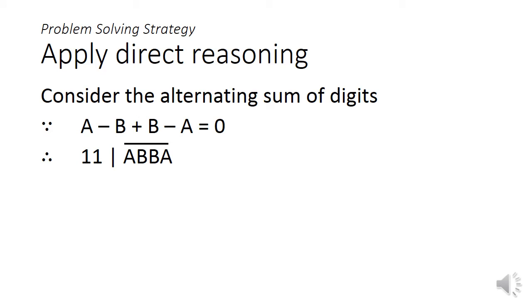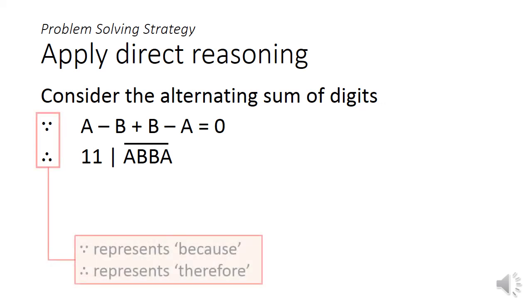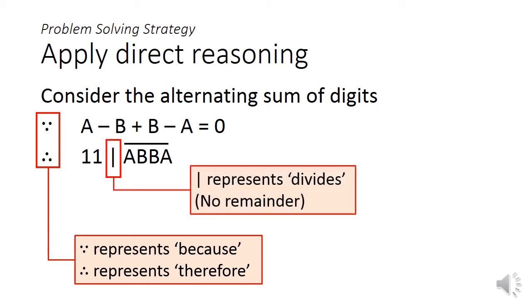Let's look at the solution. If we consider the alternating sum of digits A minus B plus B minus A, we will get a sum of 0. From our divisibility rules, we can conclude that 11 divides the 4-digit palindromic number A, B, B, A. I would also like to add some comments on the symbols I'm using here. The three dots represent because and therefore the vertical line represents divides. That means to divide a number with no remainder.